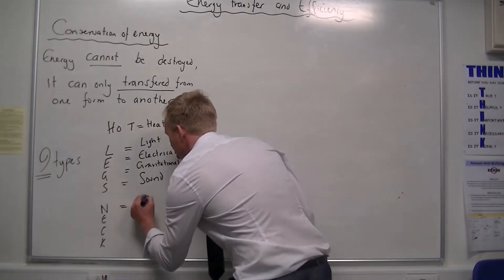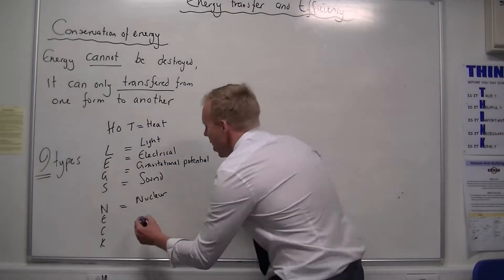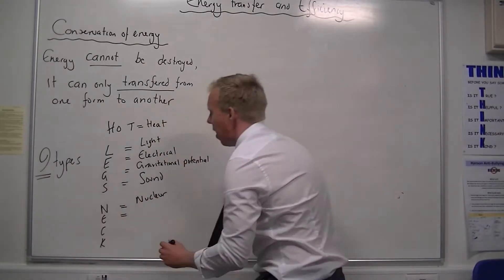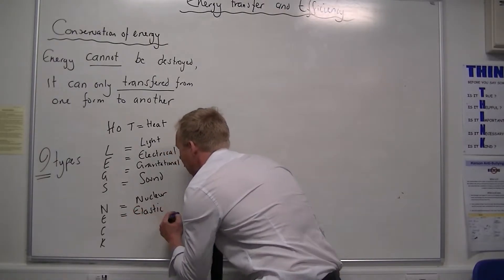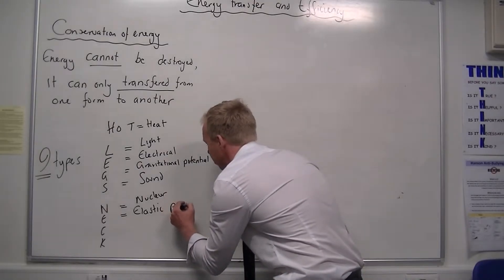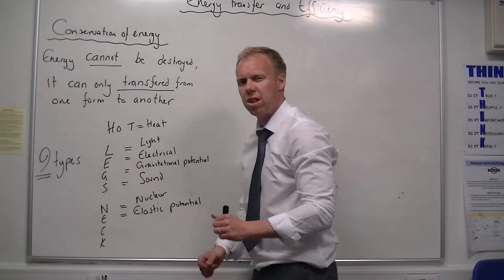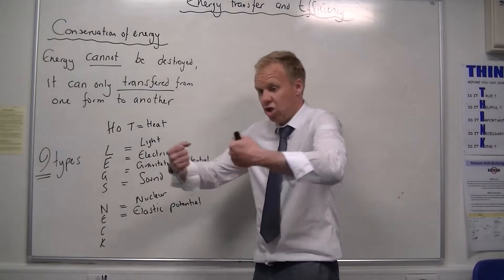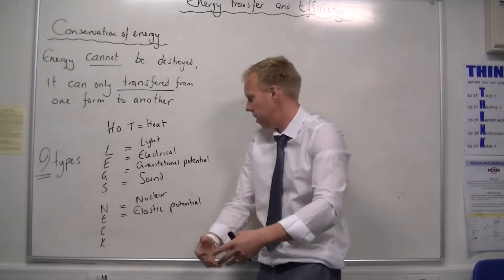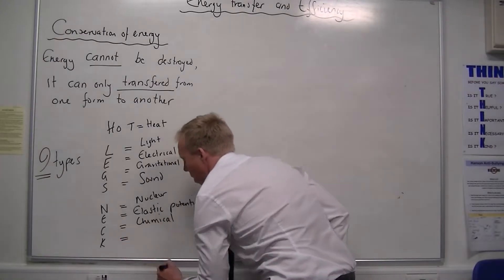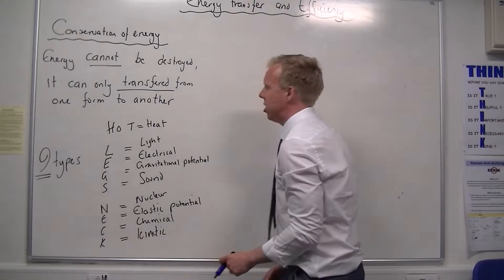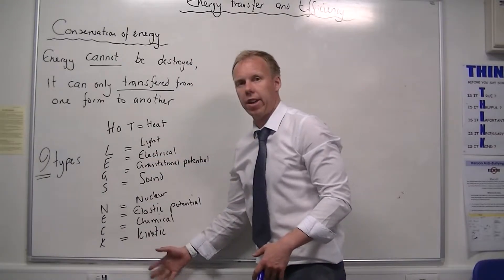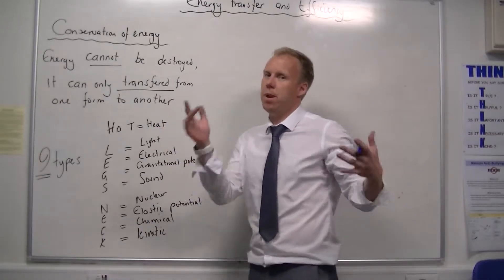N is for nuclear energy. E is for now, I was thinking here, I've had electrical, it's elastic, the second one of our potential energies. I think I put elastic potential, Mr Lee might say I'm wrong there, but I call it elastic potential. That's when if something is stretched, and it wants to return to its normal shape. C, chemical energy. And the final one, the K in the neck, is kinetic, otherwise known as movement energy. So, hot legs and neck is a way of trying to remember the nine energies. If you can find a better way, please do.